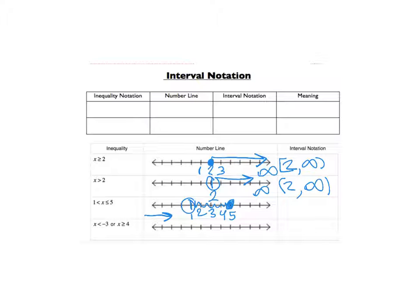So our circle starts on 0, parenthesis, open circle 1, comma, 5. That's where we stop. It's a bracket.